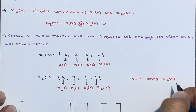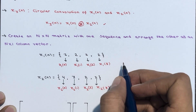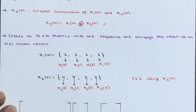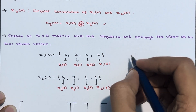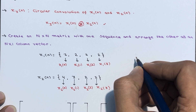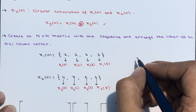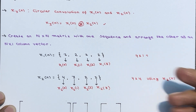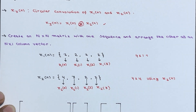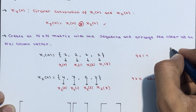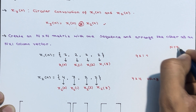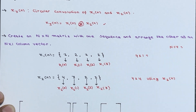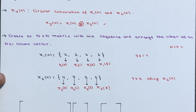And arrange the sequence x1[n] as a column vector of order N×1, which means 4×1. The value of N here is 4, as we already discussed in the last two lectures.